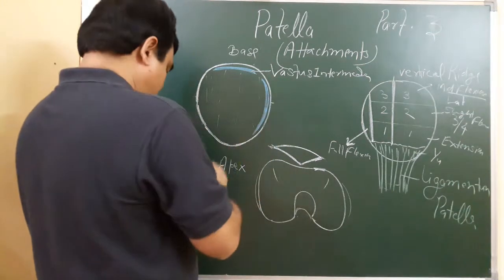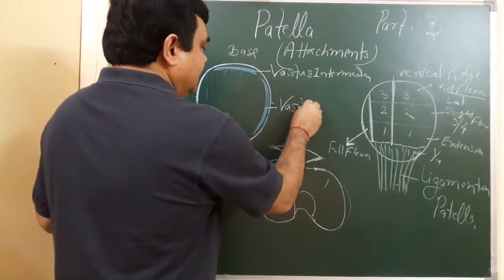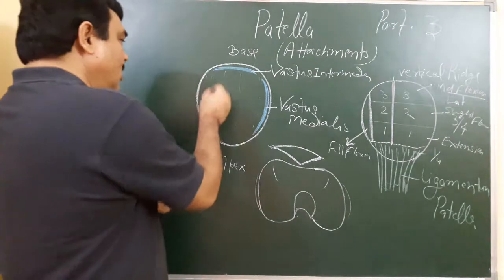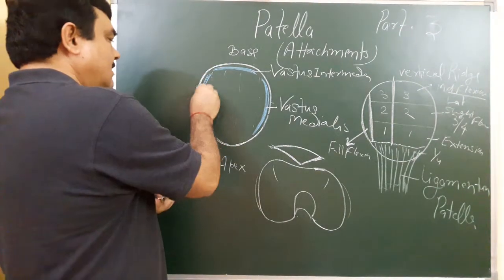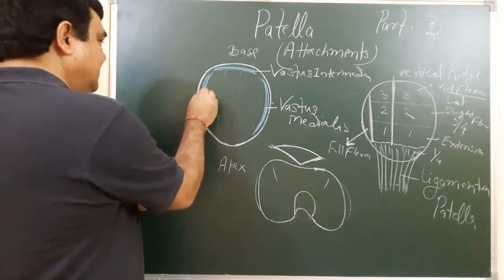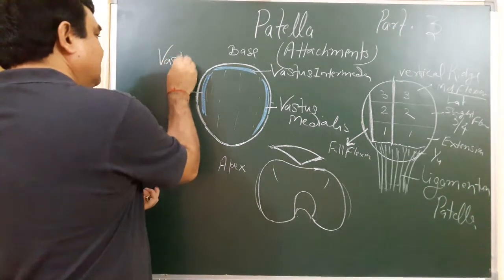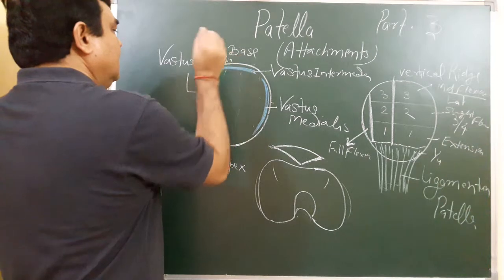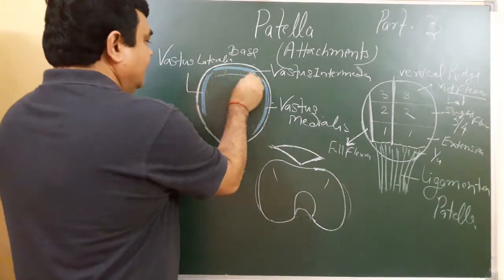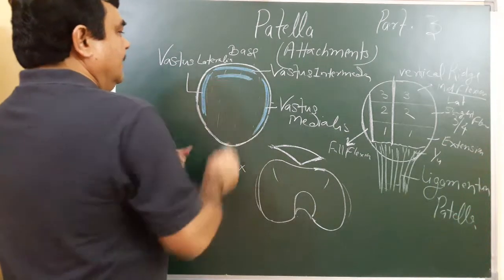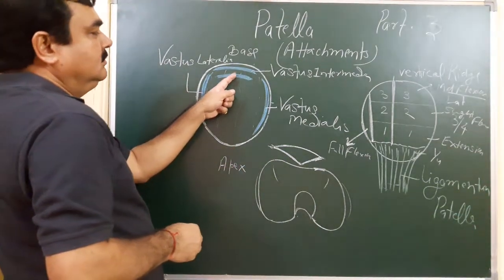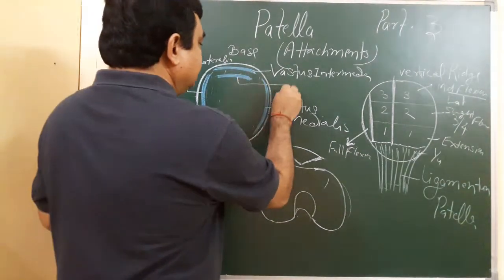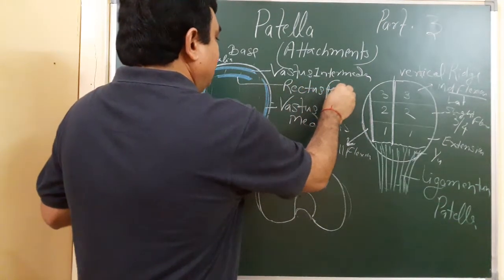Along the lateral border, this is vastus lateralis. And the muscle lies here, just anterior to the vastus intermedius. This is rectus femoris.